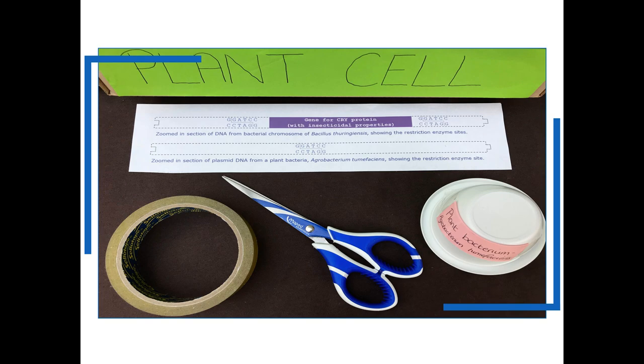To do it in the classroom you will need a box such as the one that photocopying paper comes in, covered in green and labeled as a plant cell, a yogurt pot labeled as a plant bacterium, the two paper DNA templates from the resource, scissors and sticky tape.